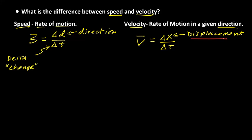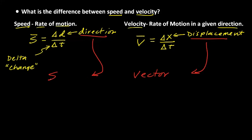Because velocity is calculated with displacement rather than distance, velocity is a vector quantity — it includes a direction. Speed, on the other hand, does not include direction in its calculation, so speed is a scalar quantity. That is the ultimate difference between speed and velocity: speed is a scalar measurement, while velocity, calculated using displacement, is a vector measurement.